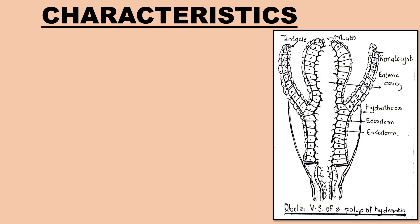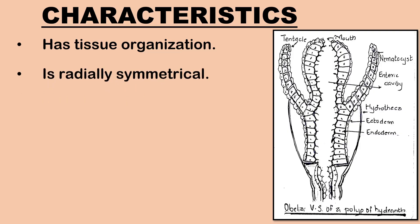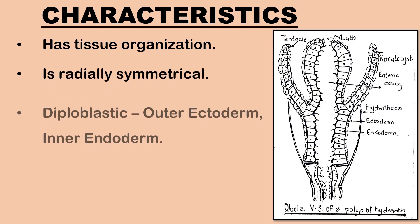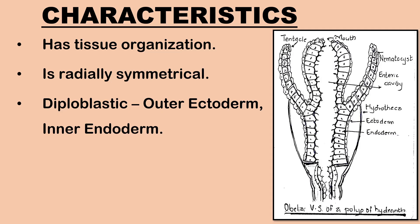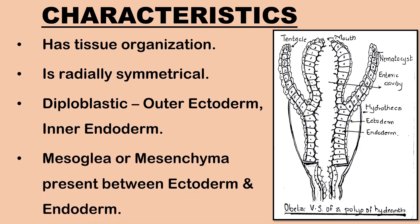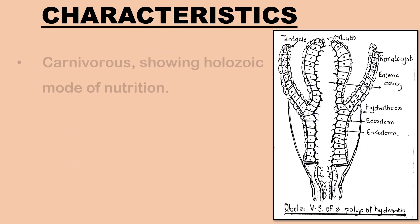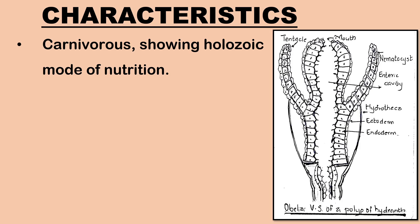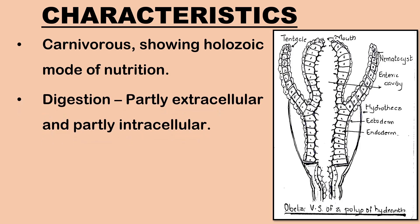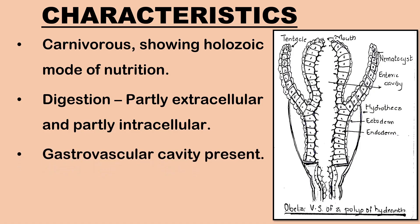Let us understand the characteristic features of Obelia. Obelia has tissue organization and is radially symmetrical. The organism is diploblastic with an outer ectoderm layer and inner endoderm layer. There is a jelly-like substance between the two layers known as mesoglia or mesenchyma. Obelia is carnivorous with holozoic mode of nutrition. Digestion is partly extracellular and partly intracellular. It shows the presence of a gastrovascular cavity.